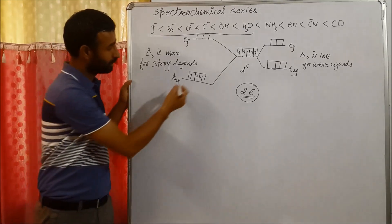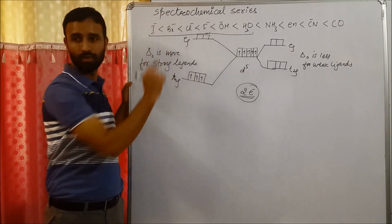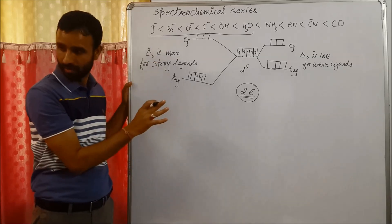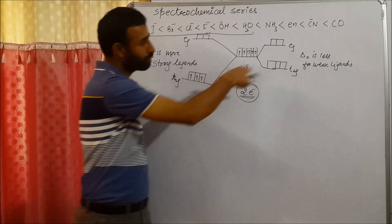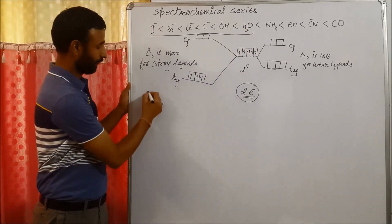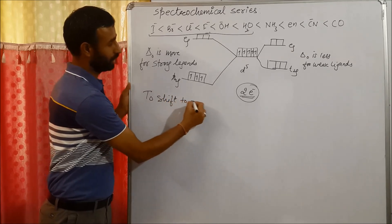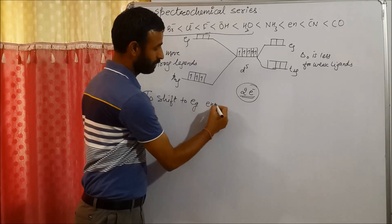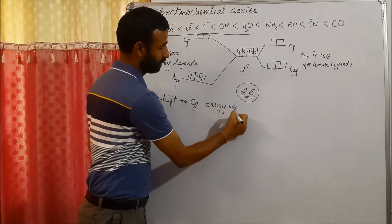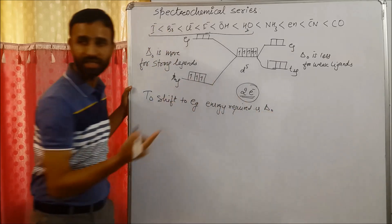One is they can pair, or remain unpaired but shift in the EG. To shift to EG, energy required is, yes, what is energy required? Delta O.